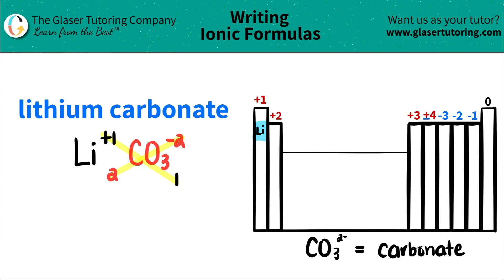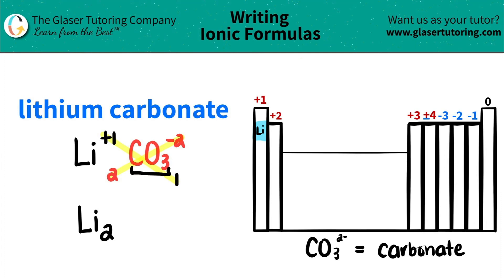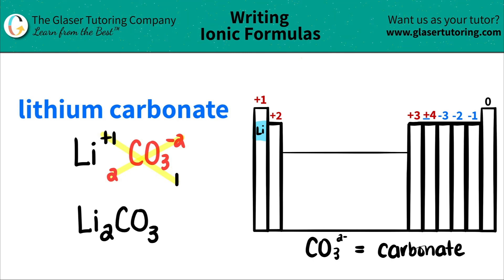So let's write it out. We have lithium, Li, and I need two of them, so I write Li₂. Since I only have one of the polyatomic carbonate, I do not need parentheses — I just write CO₃. You don't have to write the one; if you just have one of something, you don't write it in standard notation, and you're done. So lithium carbonate is Li₂CO₃.